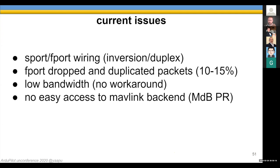The most annoying issue I encountered with F-Port and S-Port is dropped and duplicated packets. I don't think there's a workaround for this — we just have to live with it and find ways to compensate for packet loss. We can improve wiring by taking care of inversion and duplex. The best option would be soft serial — I know that's not going to make Tridge happy because he's the one who has to implement it, but it would simplify things a lot.